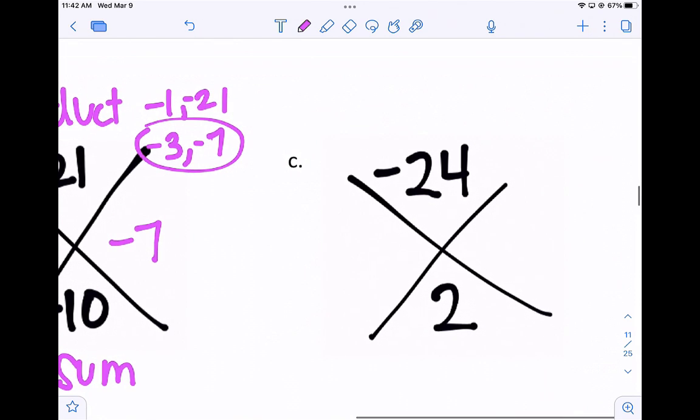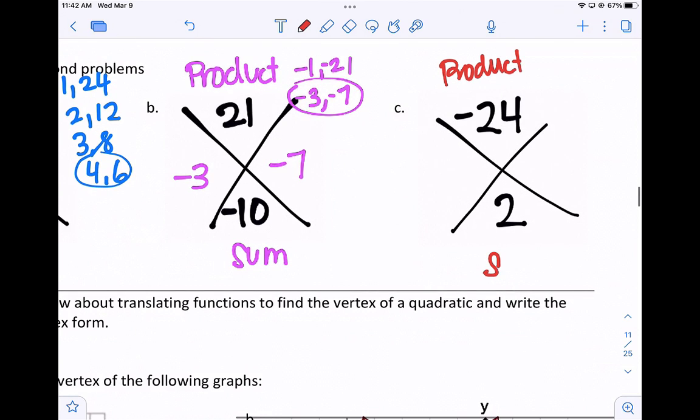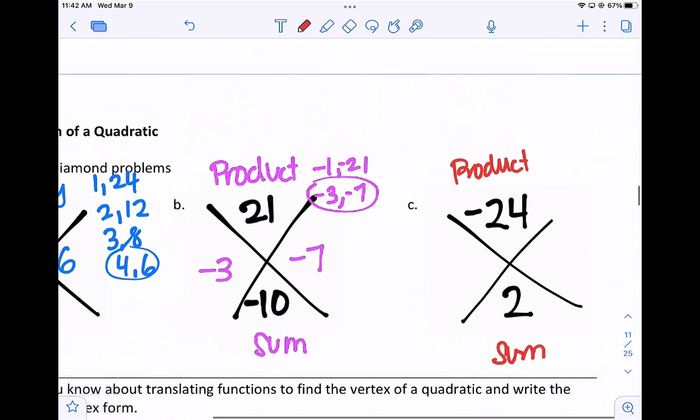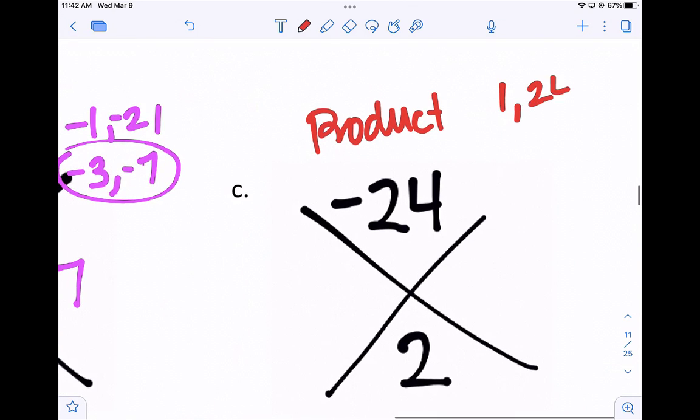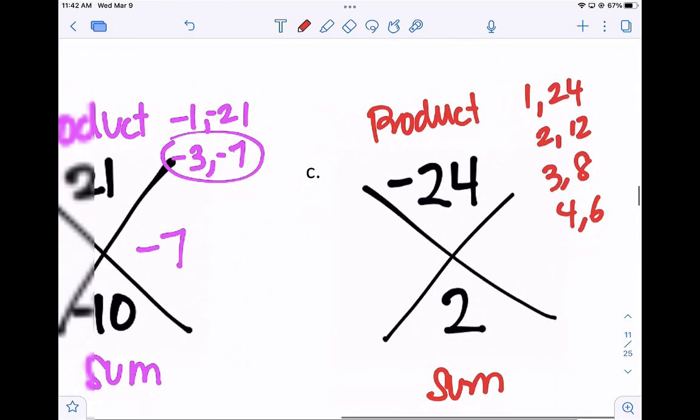And then our last one, again, what multiplies to the negative 24? So what's the product? Factors of that, that adds to 2. And if I just list factors of 24: 1 and 24, 2 and 12, 3 and 8, 4 and 6. Oh, we had these all written down before.